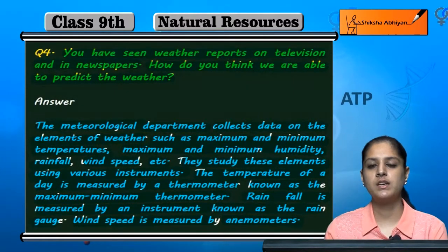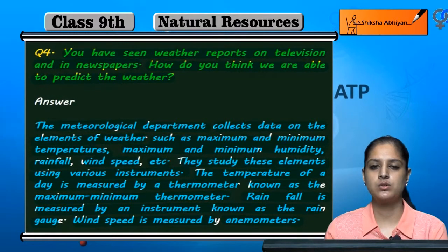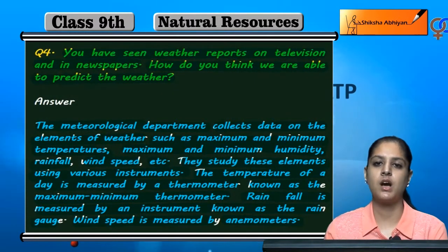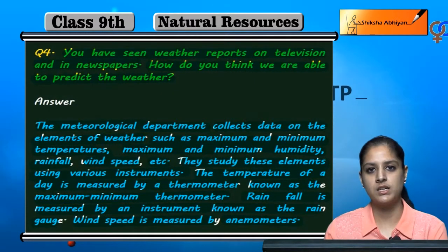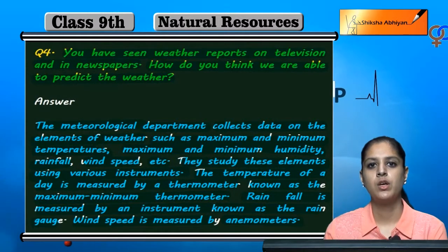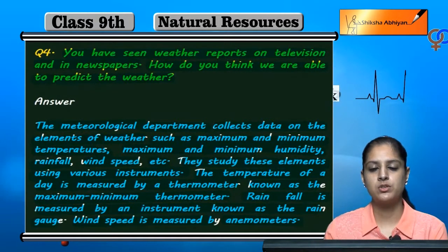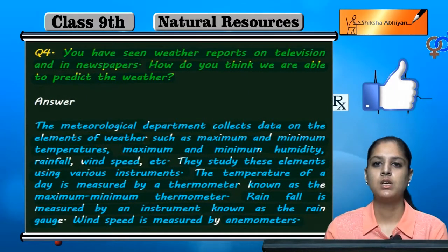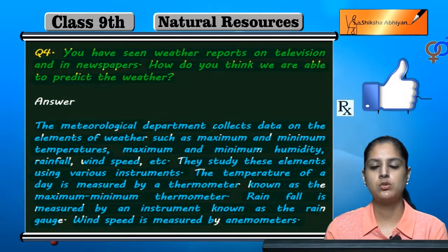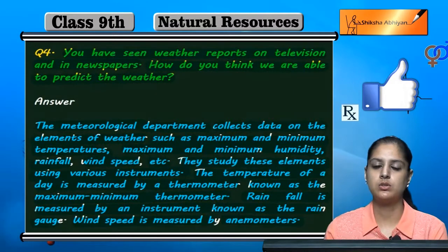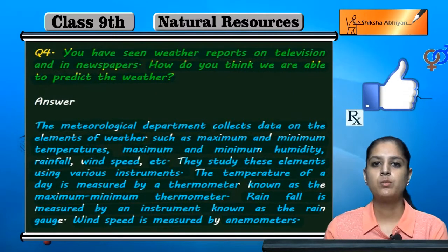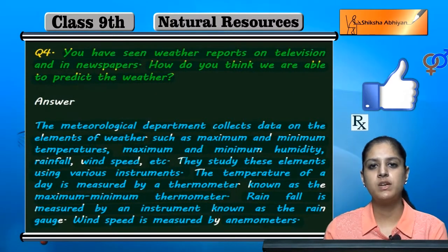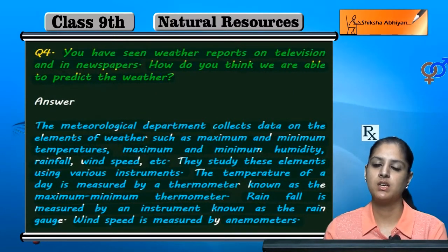After studying all these measurements, predictions are made for the current day or the next days — including temperature, rainfall, humidity, and wind speed. All these predictions are made with the help of these instruments.